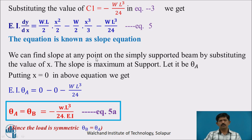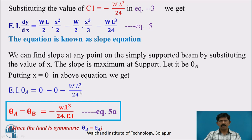We can find the slope at any section by substituting the value of x. The slope is maximum at the supports. Putting x = 0 to find slope at support A (θA): EI·θA = 0 − 0 − WL³/24, therefore θA = θB = −WL³/24EI (Equation 5A). θA equals θB because the load is symmetric.